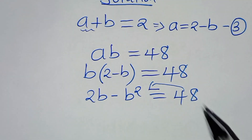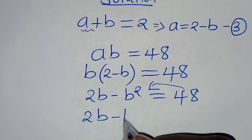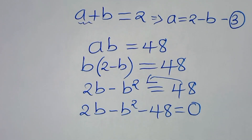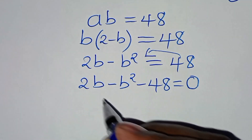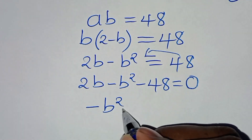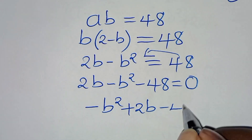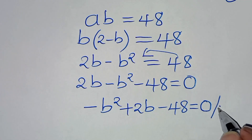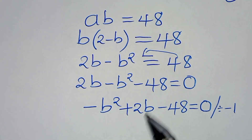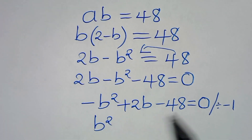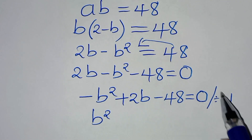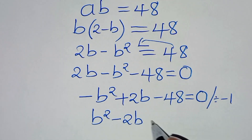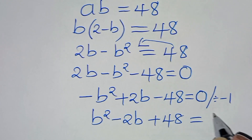Let's take 48 to the left-hand side, so we have 2b minus b squared minus 48 equals 0. Rearranging, we have minus b squared plus 2b minus 48 equals 0. Dividing both sides by minus 1 gives us b squared minus 2b plus 48 equals 0.